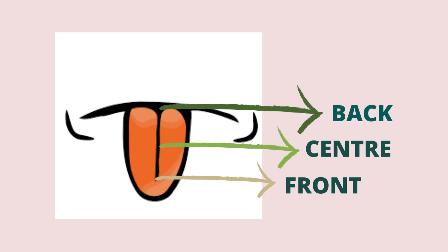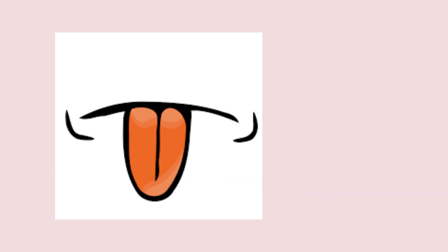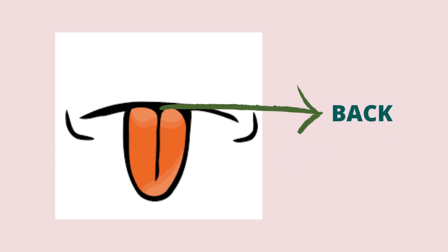Coming to the tongue divisions: the tip of the tongue, the central part, and the back of the tongue. The tip of the tongue is active during the front vowels, the central part is active during the production of central vowels, and the back of the tongue is active during the back vowels.